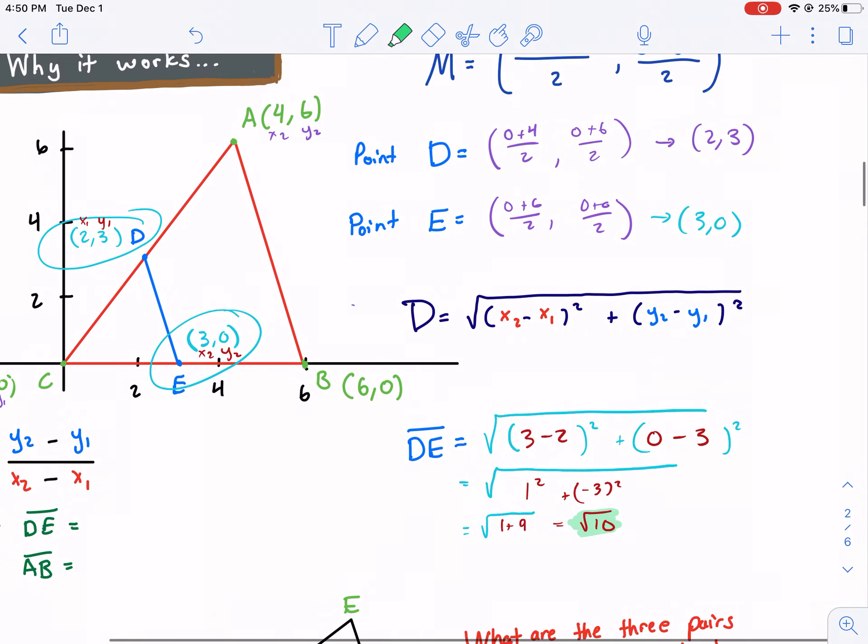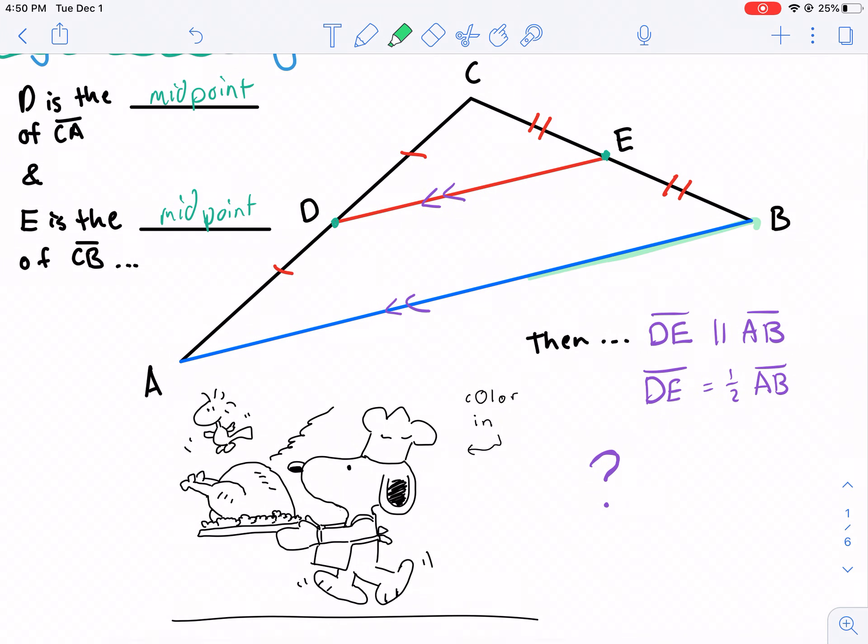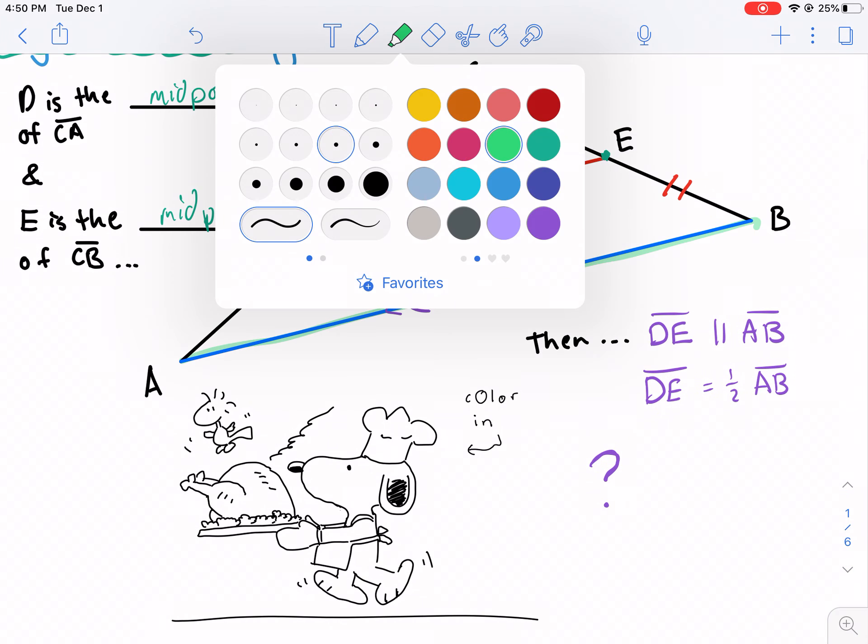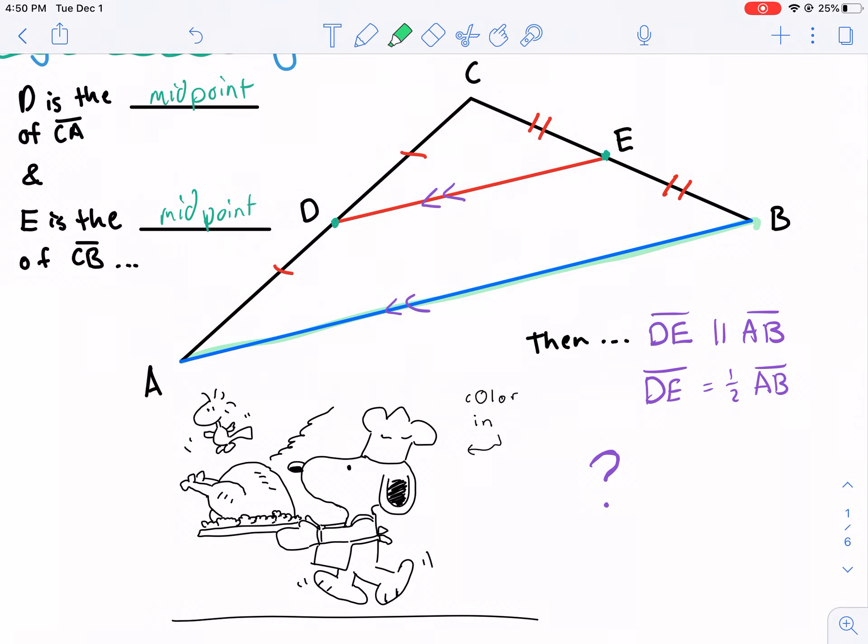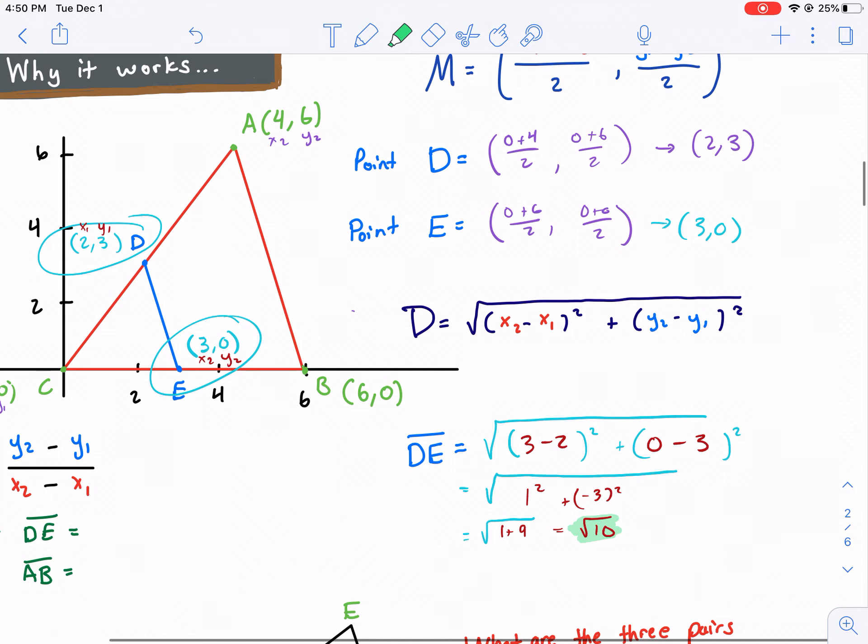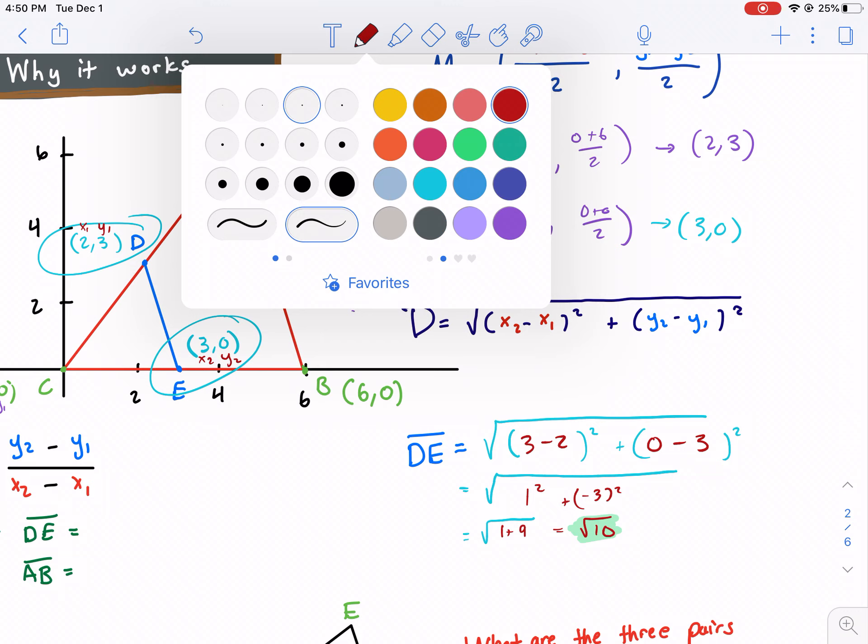Now, what did I say earlier? Well, I said DE is going to be half of AB. So it's going to be half this segment. So we need to find the segment AB now and find that distance.